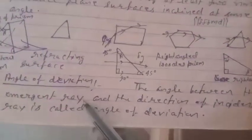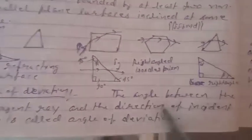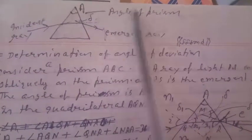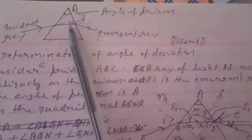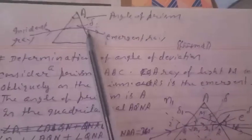Angle of deviation: The angle between the emergent ray and the direction of the incident ray is called the angle of deviation. When a ray passes through the prism, it deviates from its original path. The angle between the original line of the incident light and the emergent ray is the angle of deviation. This angle is the angle of deviation, and this is the angle of prism.